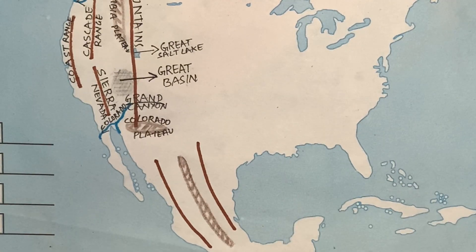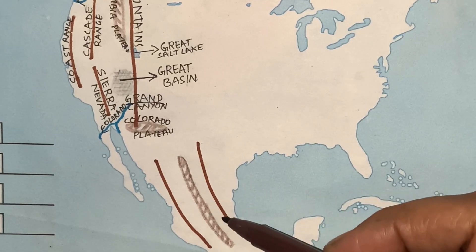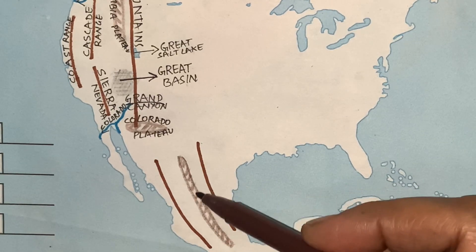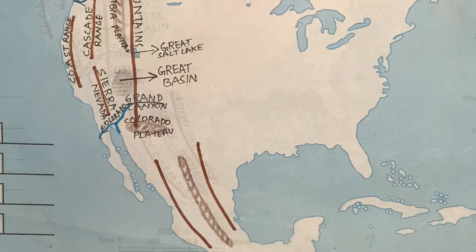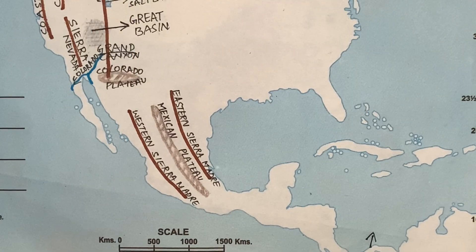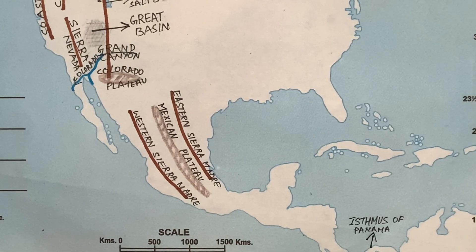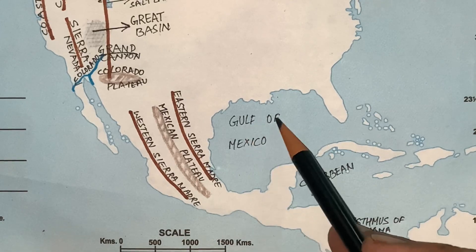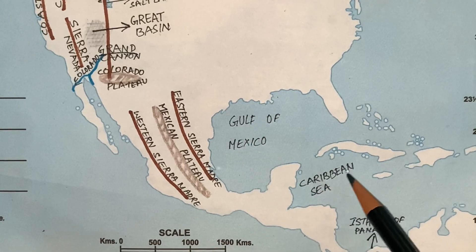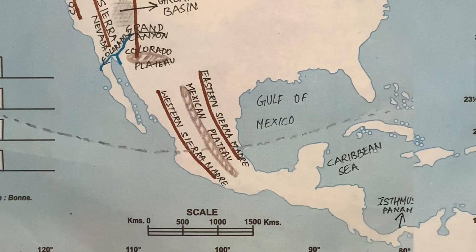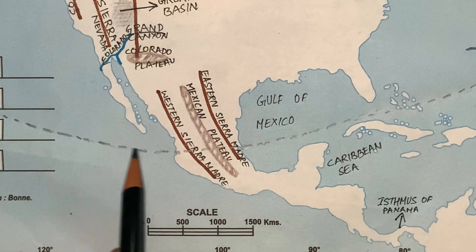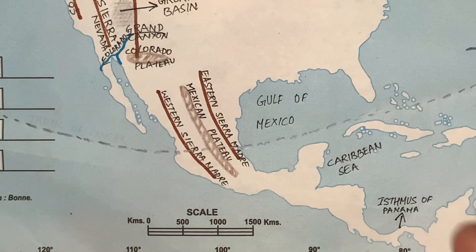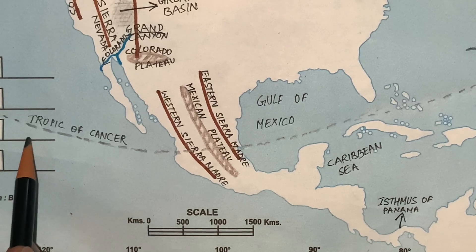Shade the plateau area and draw brown lines on both of its sides to show the mountain ranges, then write down their names. Go to the strip of land, put an arrow, and write Isthmus of Panama there. Here you will write Gulf of Mexico and below it Caribbean Sea.